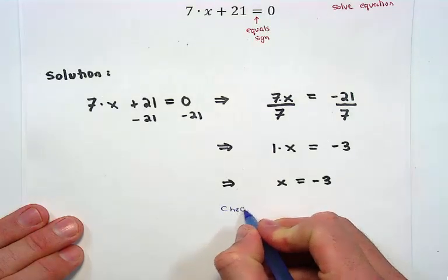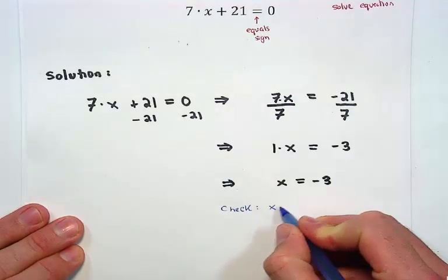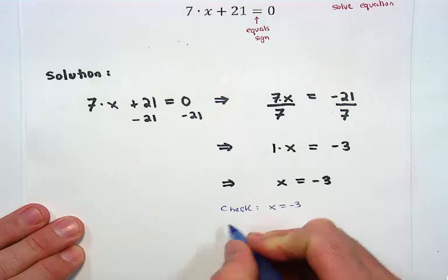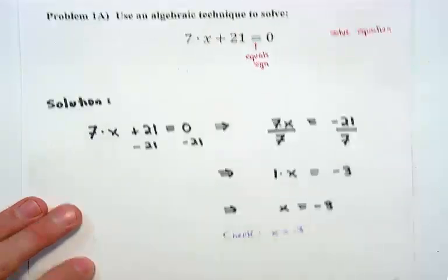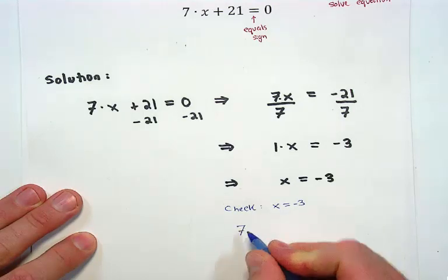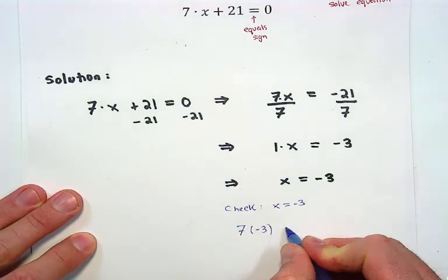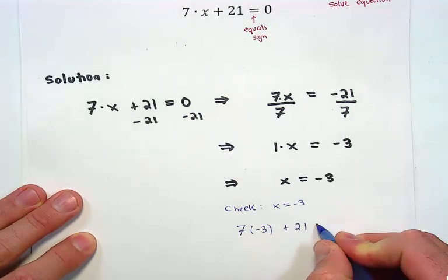We haven't checked our work yet. To do so, we need to take the value of our solution and substitute it into the original equation that we started with. Everywhere we see an x, we're going to put a value of negative three. We're not sure if this equation holds.